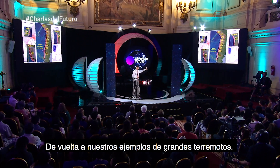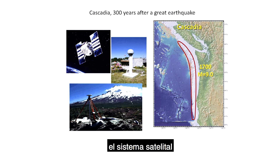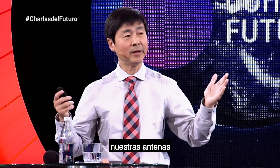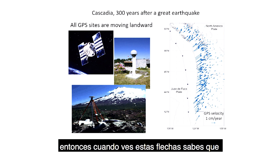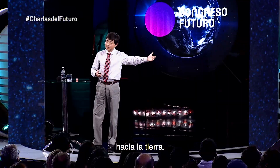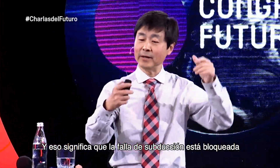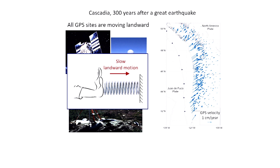Back to our examples of large earthquakes—let's look at Cascadia first. We had an earthquake there over 300 years ago, and over the past 20 years we've been using GPS to observe the motion of the land. What we see is the land area moving landward, away from the ocean. These arrows show velocities of about one to two centimeters per year toward land, with speed decreasing further inland. This tells us the subduction fault is locked and our crust is accumulating energy.